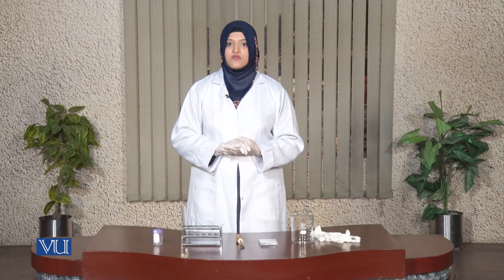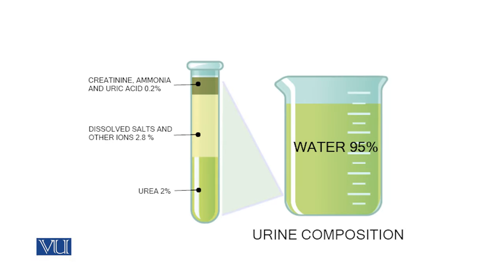Dear students, today we will discuss the macroscopic analysis of urine. First of all, I would like to describe why we need to take urine for macroscopic analysis. Urine is a body fluid which is excreted out of the body through the process called urination. The major components of urine are water and nitrogenous compounds like urea, creatinine, and some other metabolic waste compounds.